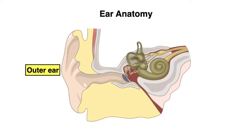Let's start with the outer ear, which begins with the pinna — what we can see externally when looking at someone — as well as the auditory canal, and then it ends at the eardrum, also known as the tympanic membrane.